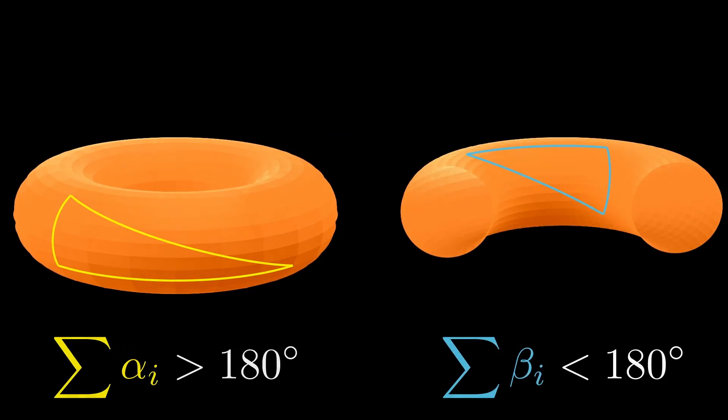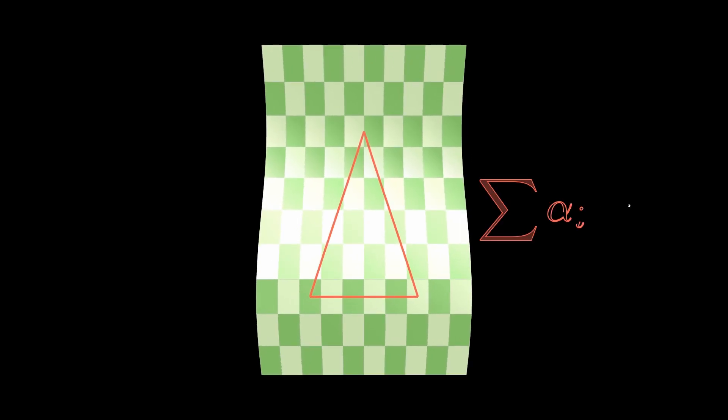Finally, consider standing on a giant bent piece of paper. You might try the same experiment with triangles. But no matter what you do, the angle sum is always exactly 180 degrees. No measurement can prove that the surface is curved. Everything behaves just like it would on a flat surface.